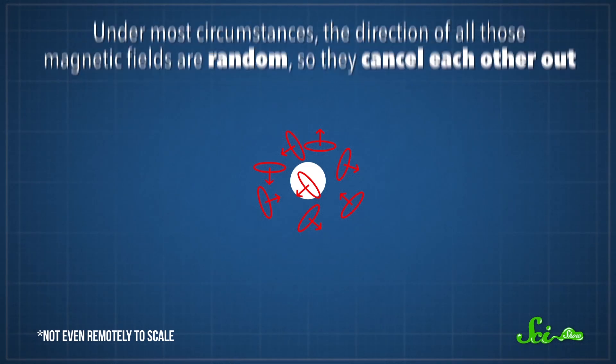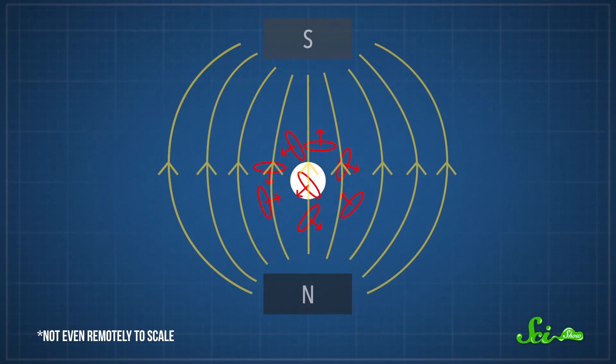But when an atom is placed inside another magnetic field, it adds an additional force to the electrons. This essentially changes their motion so that the atom gets a tiny net magnetic field that opposes the external one.